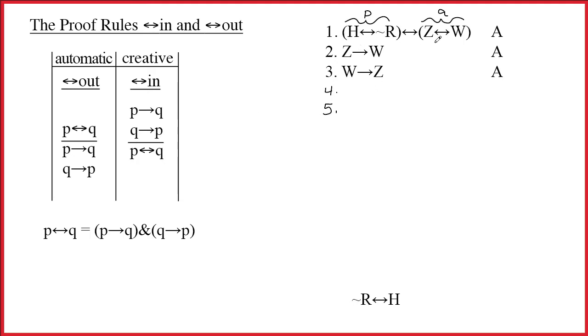The easiest way to think about this is that the first step is to rewrite that very line, but we want to replace the main double arrow with a single arrow. Don't change anything else. Just rewrite the line, replace the double arrow with a single arrow. And then the next step is to flip it with respect to that arrow. So for the second step, we're going to write Z double arrow W arrow H double arrow tilde R. The justification for both of those is going to be one double arrow out. Just like with ampersand out, I will use ditto marks here to show that I'm doing the same thing twice. And now I can check off line one.